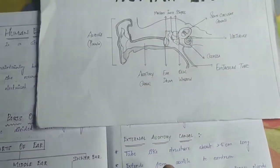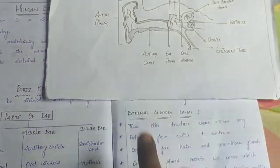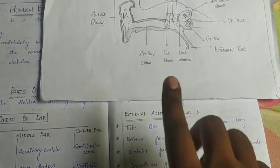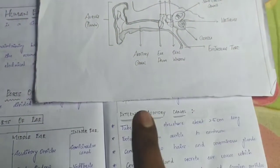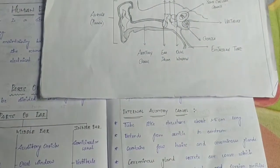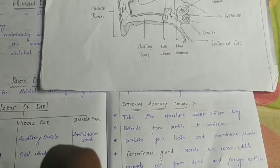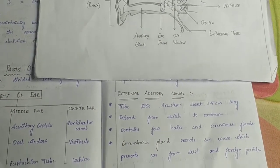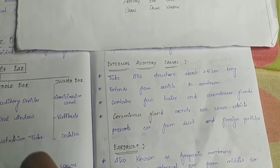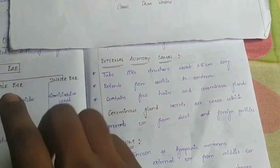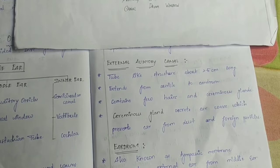Next, let's see the external auditory canal. The external auditory canal is a tubular structure, two to five centimeters long, running from the auricle to the ear drum. It contains a few hairs and ceruminous glands. The ceruminous glands produce ear wax, which helps to trap dust and foreign particles.